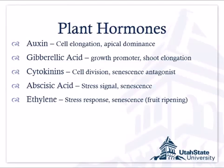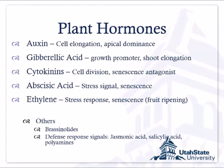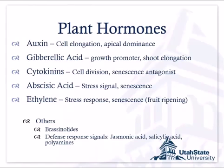There are other hormones including brassinolides, jasmonic acid, salicylic acid, and polyamines. Some of these are involved in insect defense responses — if an insect starts chewing on the leaves, the plant produces things that make the leaves taste nasty. However, I'm not going to talk a lot about jasmonic acid, salicylic acid, or polyamines because we don't use them to try and regulate growth.